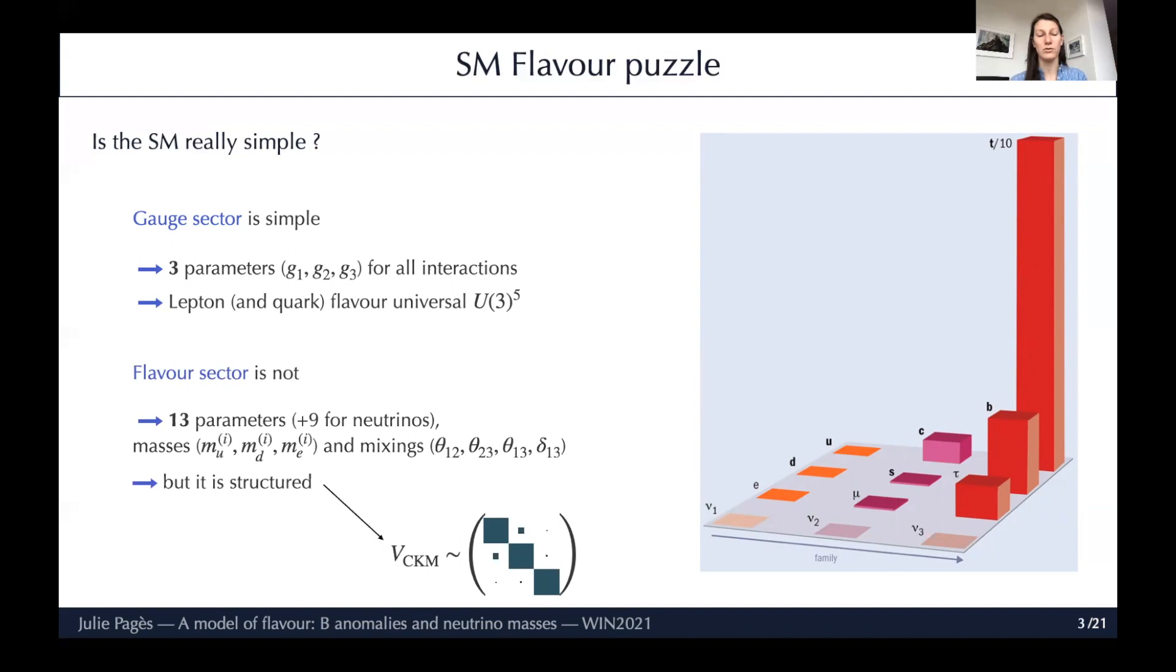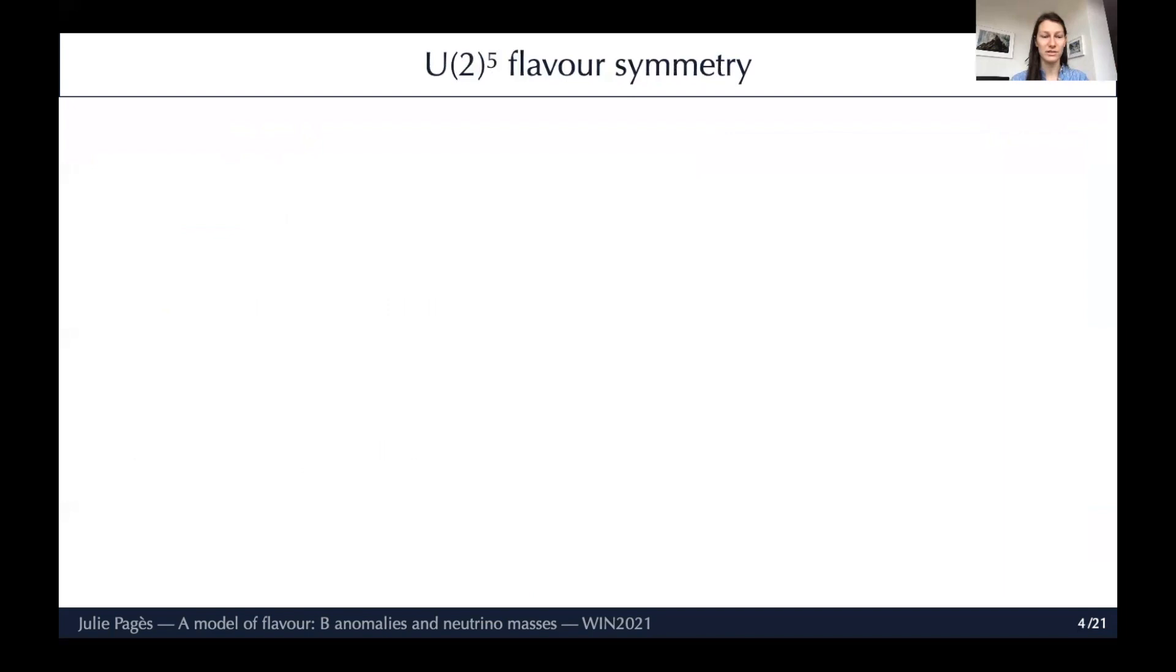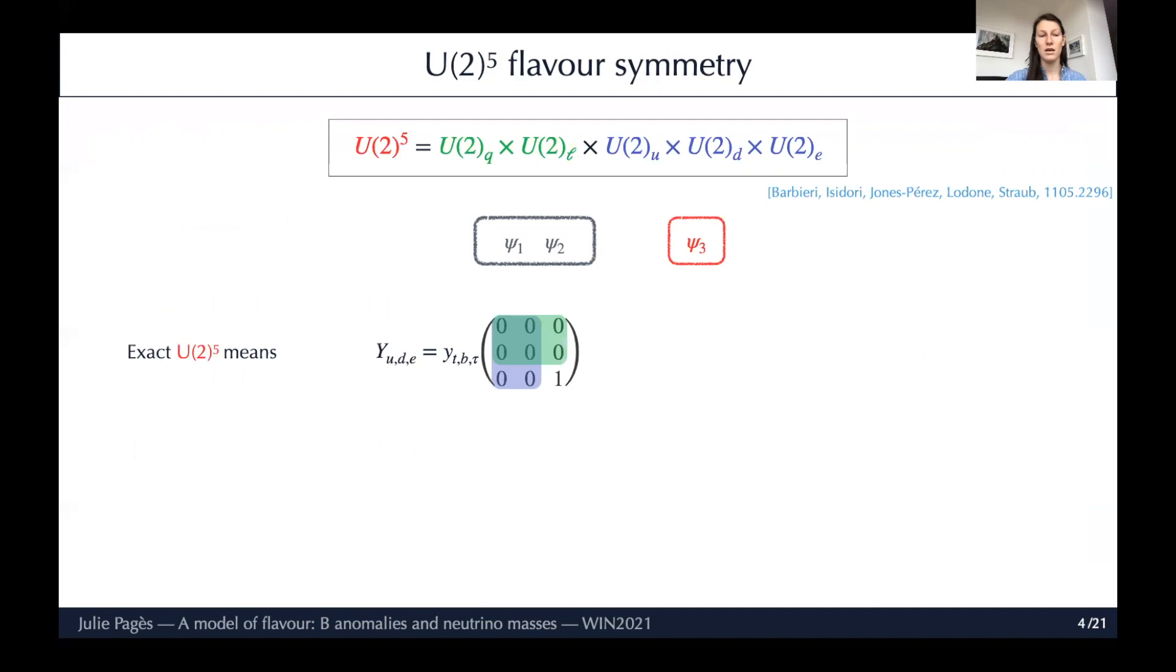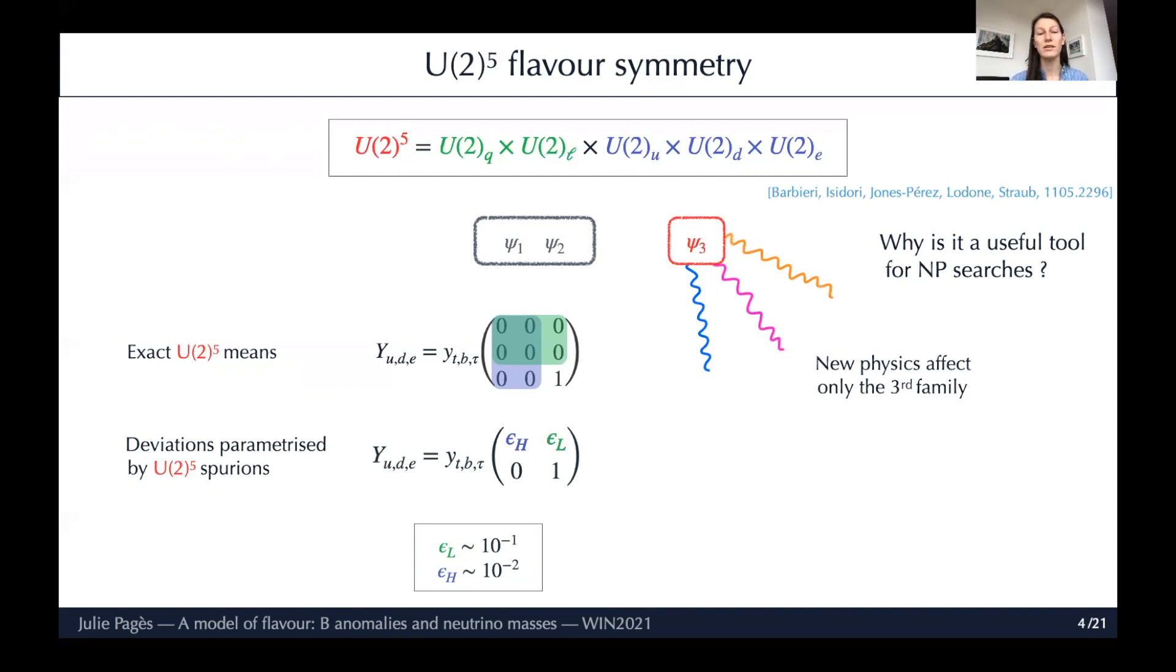However, it seems to have a structure. The CKM is more or less the identity and the mass spectrum is very hierarchical. We have a flavour symmetry that now looks more like U(2)^5. This U(2) flavour symmetry would distinguish the third family from the first and second families. In the case of U(2), only the third family quarks and leptons get a mass. We can parameterize deviations from this approximate symmetry by small spurions εL and εH of order 10^-1 to 10^-2. Why is this symmetry a useful tool for new physics searches? Because this way the new physics will only affect the third family, leaving the light families protected.